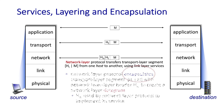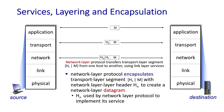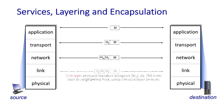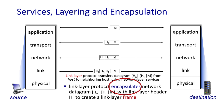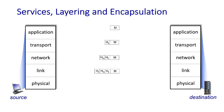A network layer protocol encapsulates the transport layer segment and adds its own network layer header information (H_n) to create a network layer datagram. The datagram is the protocol data unit at the network layer; the header is used to implement the network layer service. In the internet's IP protocol, the IP addresses of the sending and receiving hosts are contained in the network layer header. The link layer similarly encapsulates the network layer datagram and adds its own link layer information; the resulting protocol data unit is known as a frame.